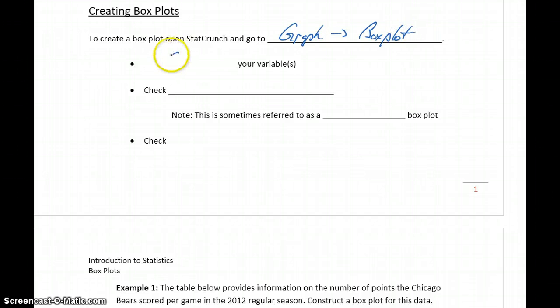The first thing we'll do once the window pops up is select the variable or variables that we want to work with. When we're constructing box plots, we can select one or more variables and graph those all on the same graph and we'll eventually take a look at doing that.